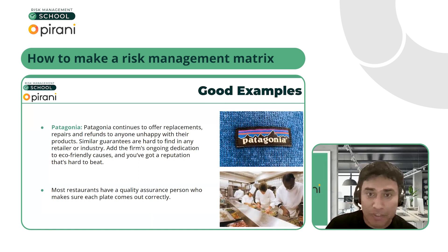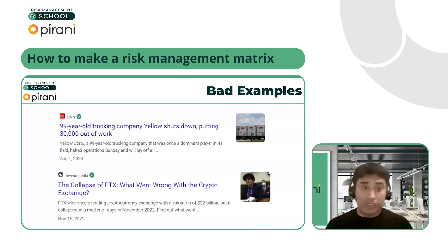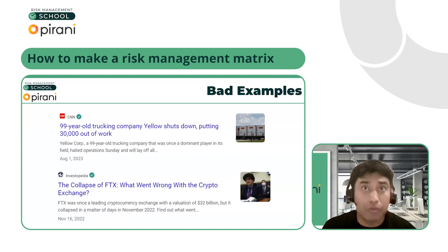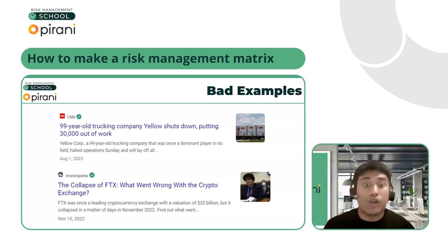Now let's take a look at some bad examples. Most recently, there was a very big freight company in the US that went bankrupt. There are a lot of reasons that resulted in that bankruptcy, which means ultimately their risk management strategies failed. That's not good, because now all these other companies that were relying on them for their materials or services can no longer rely on them and need to go look elsewhere.